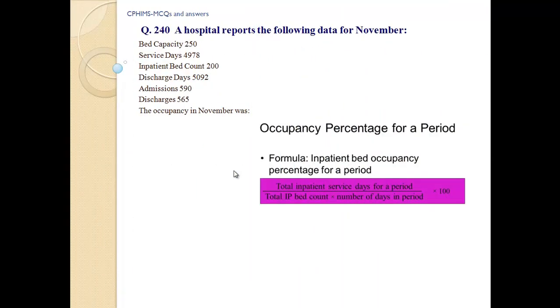Question number 240: A hospital reports the following data for November: Bed capacity 250, service days 4,978, inpatient bed count 200, discharge days 5,092, admissions 590, discharges 565. The occupancy in November was: